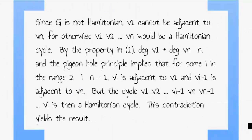Since G is not Hamiltonian, V1 cannot be adjacent to VN. For otherwise, V1, V2, all the way to VN would be a Hamiltonian cycle. By the property in 1, DEG V1 plus DEG VN is greater than or equal to N.